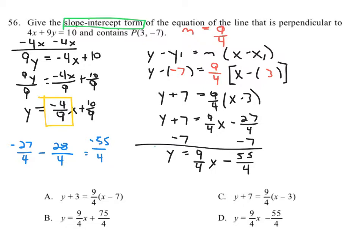And you can see that this is actually one of the answers down here: y equals 9 fourths x minus 55 over 4, answer D.